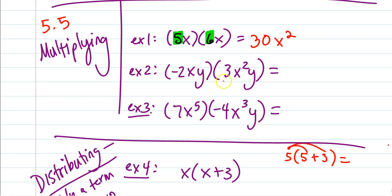I have negative 2 times 3, which multiplies to give us negative 6. x times x squared would multiply to give us x to the third, and y times y would be y squared. These rules should be a review at this point, because we've had a previous section going over all the laws of exponents.